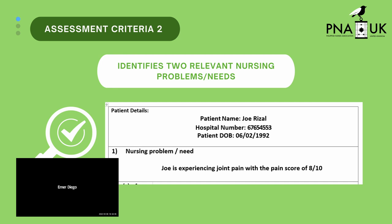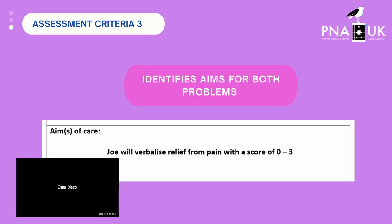You can also write risk problems for your patient. Next is the aim of care — identify aims for both problems. You will fail if you've only identified one aim. Make sure the aim of care is relevant to the problem identified. For example, if writing about pain, the aim should be relevant — as shown on screen: 'Joe will verbalize relief from pain.'